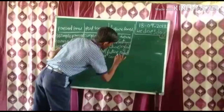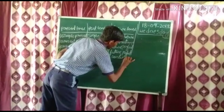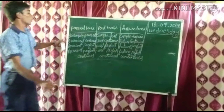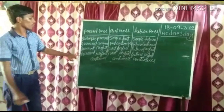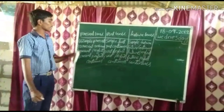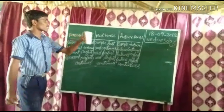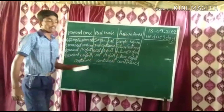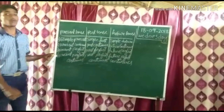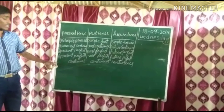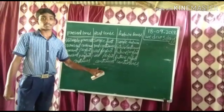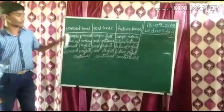These are the four types of rules in present tense, past tense, and future tense. I will tell tomorrow in the next class about these four types of tenses. Thank you.